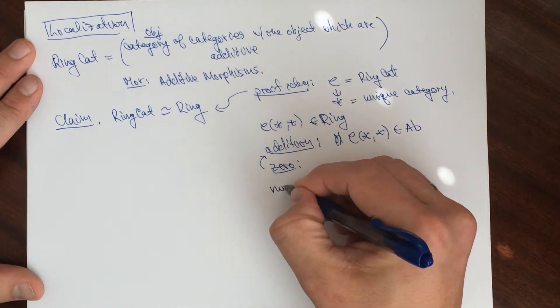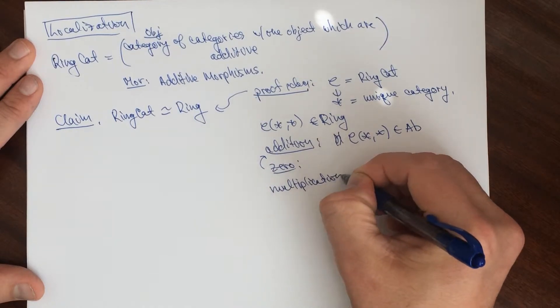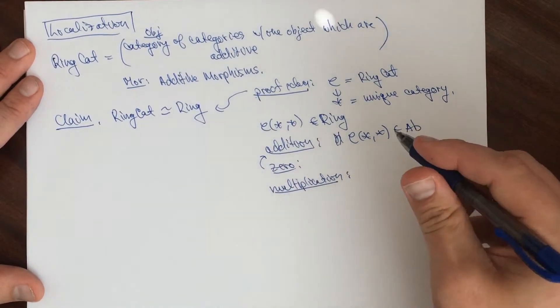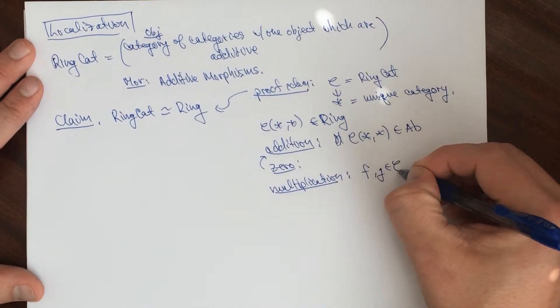The multiplication. Multiplication is just composition. Given F and G in here, then F composed with G defines the multiplication.